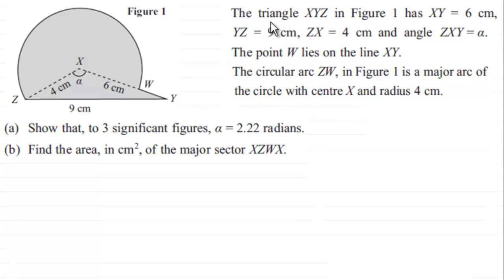What we've got here is the triangle XYZ in this figure and we're told that XY is 6cm, YZ is 9cm, and ZX is 4cm. And angle ZXY is alpha. The point W lies on XY and the circular arc ZW in figure 1 is a major arc of the circle with centre X and radius 4cm.